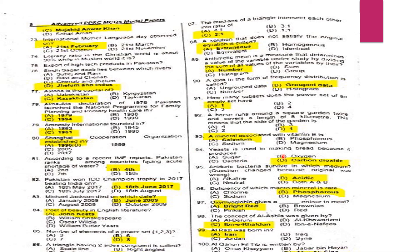MCQ 94: Yeast is used in making bread because it produces carbon dioxide.